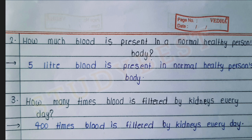Question two: how much blood is present in a normal healthy person's body? The answer is 5 liters. Question three: how many times is blood filtered by the kidneys every day? The answer is 400 times.